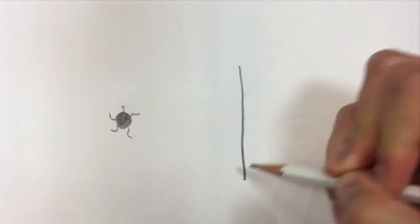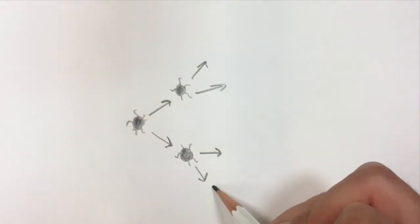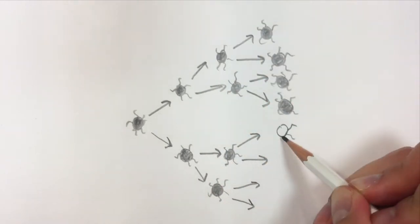The formation of a biofilm begins when a bacteria floating in water attaches to a surface. Once it has attached, the microbe will multiply into hundreds, thousands, millions, billions, and even trillions of cells.